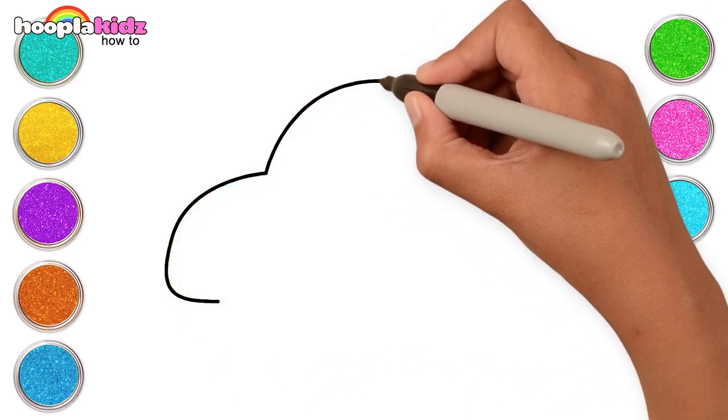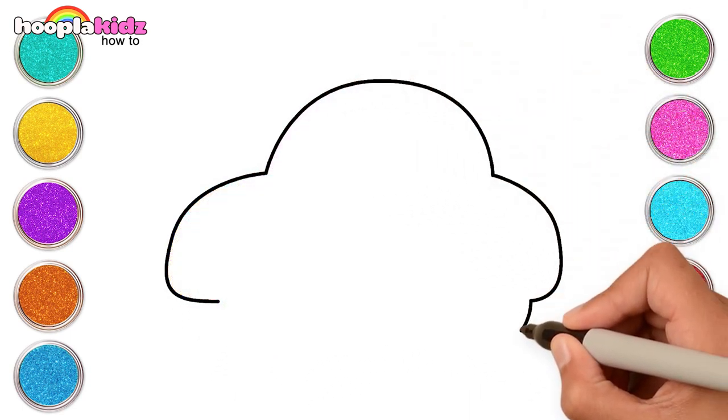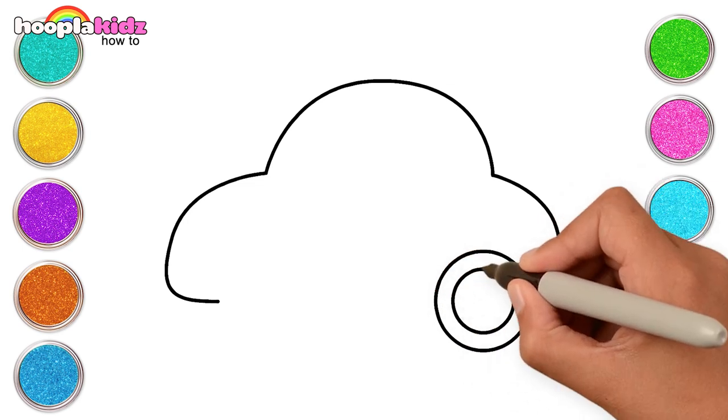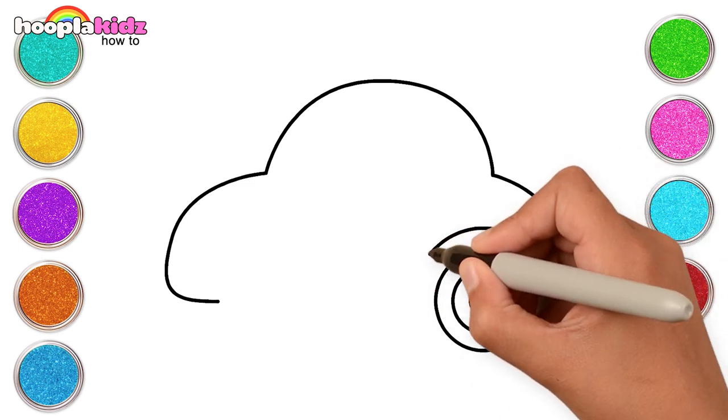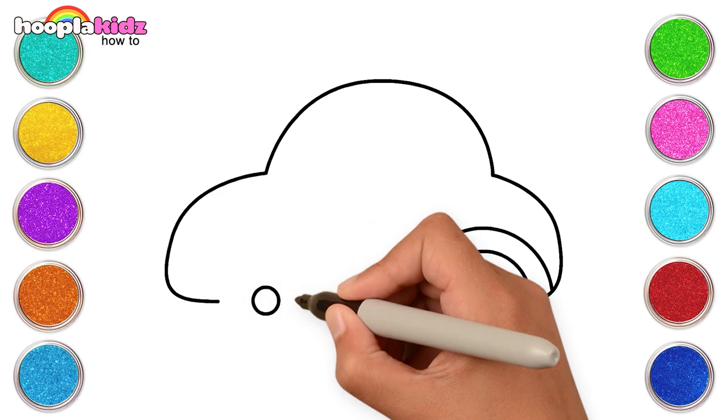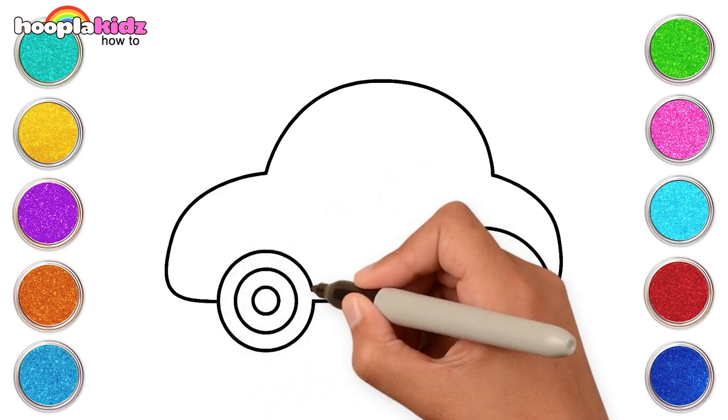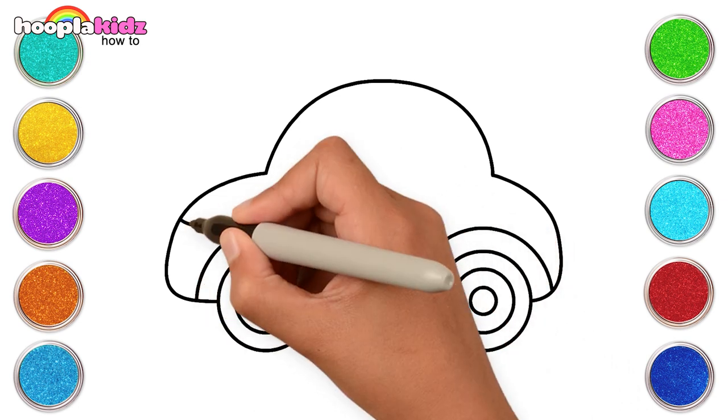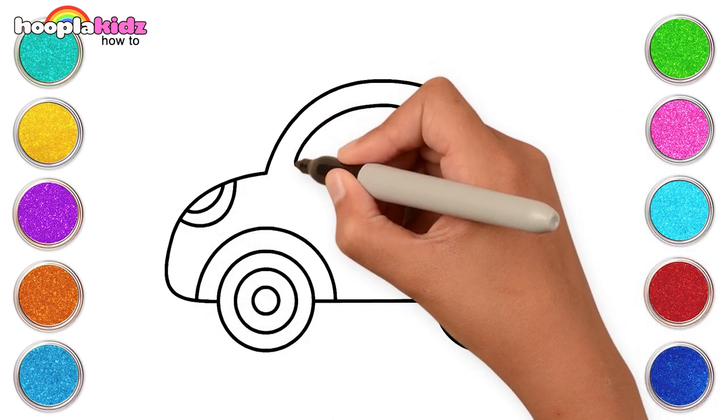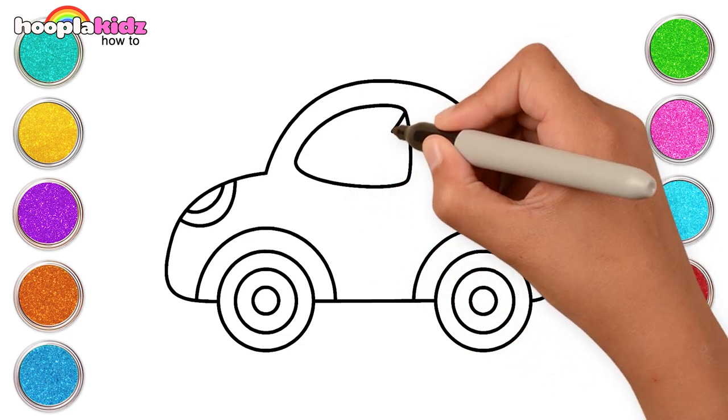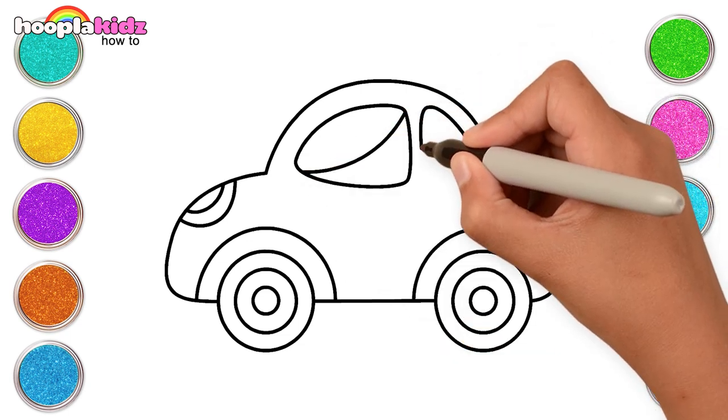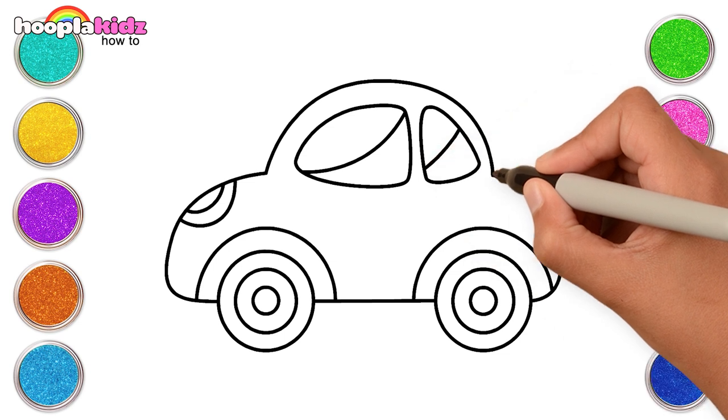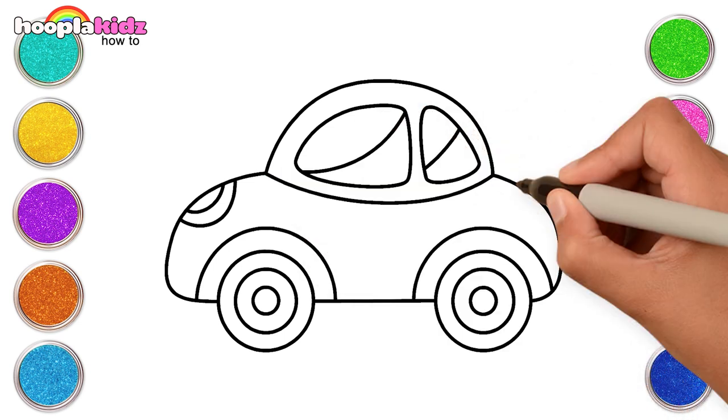Start with 3 curves, 3 circles for the wheels. Connect to do the same for the other wheel too. Make the headlights and the windows. Some final touches and done!